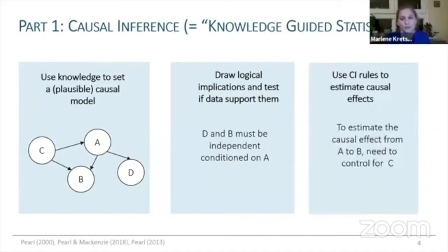We can use causal inference rules or graph rules to estimate causal effects. This is always based on the model and is essentially about blocking the influence of other nodes which might affect the link we are interested in estimating. For example, if we want to estimate the causal effect from A to B, we need to control for any common driver C.